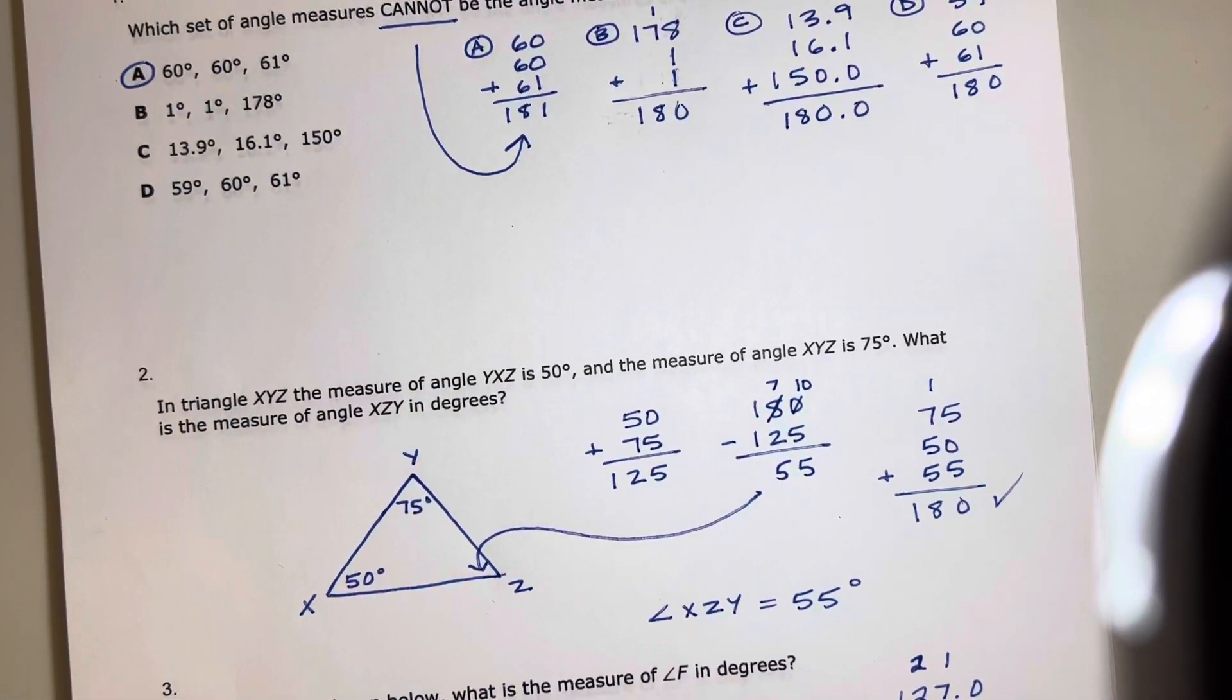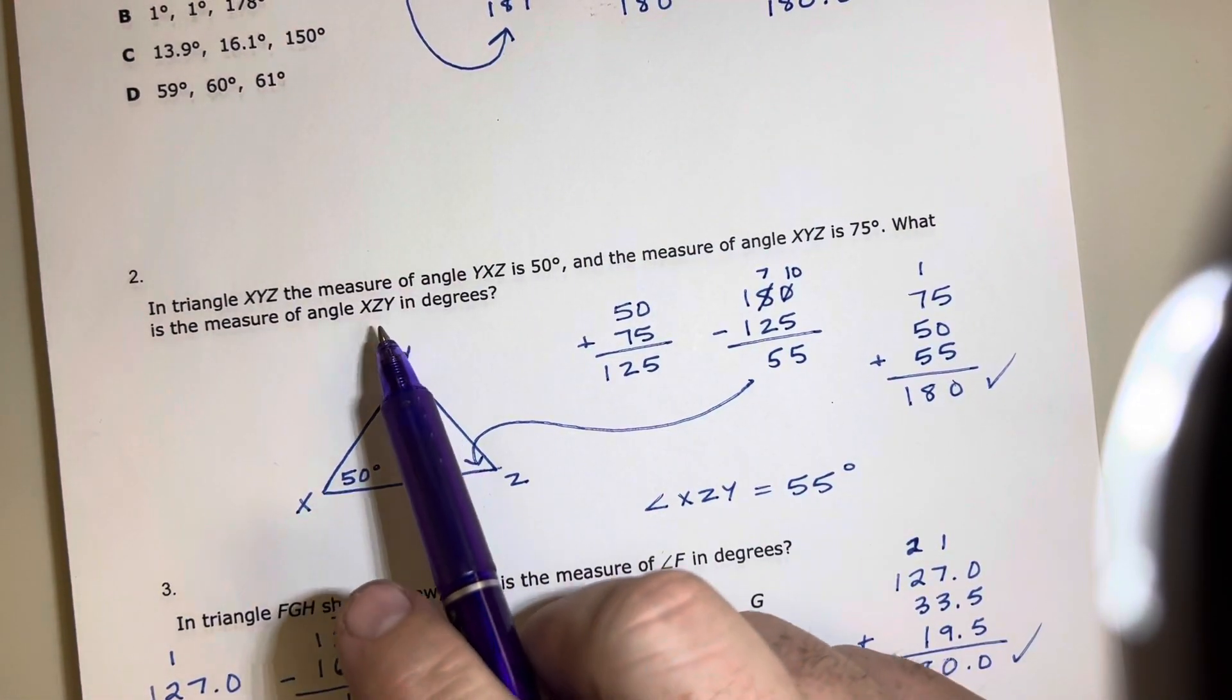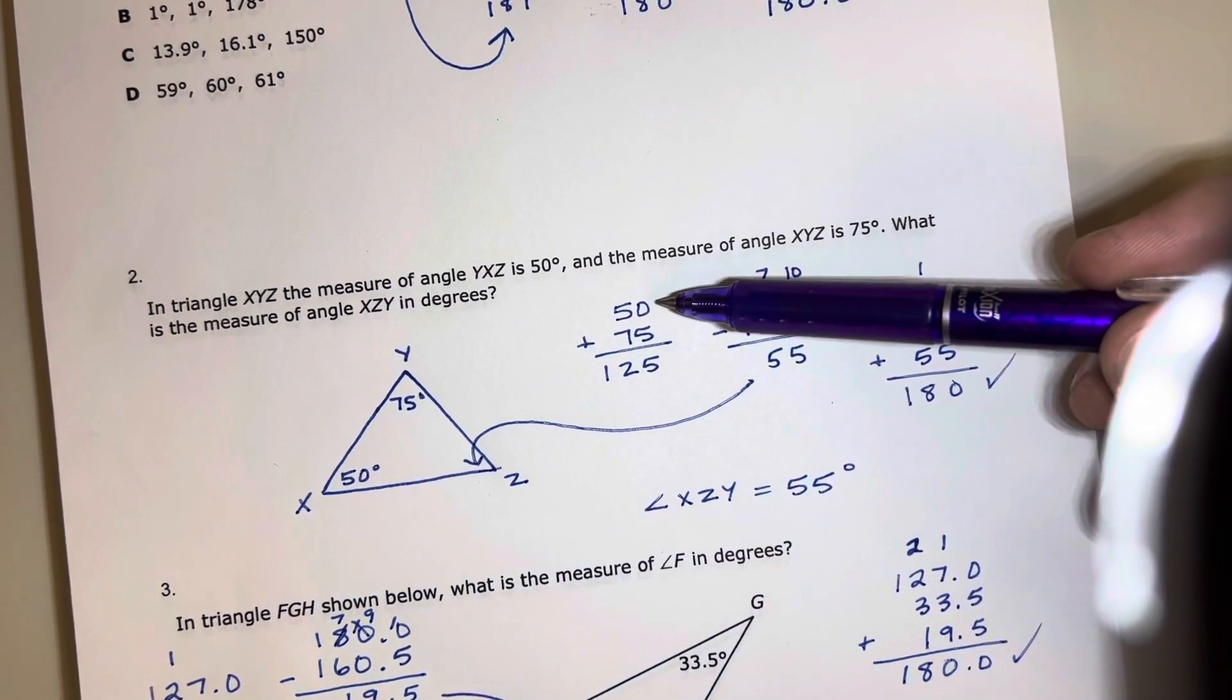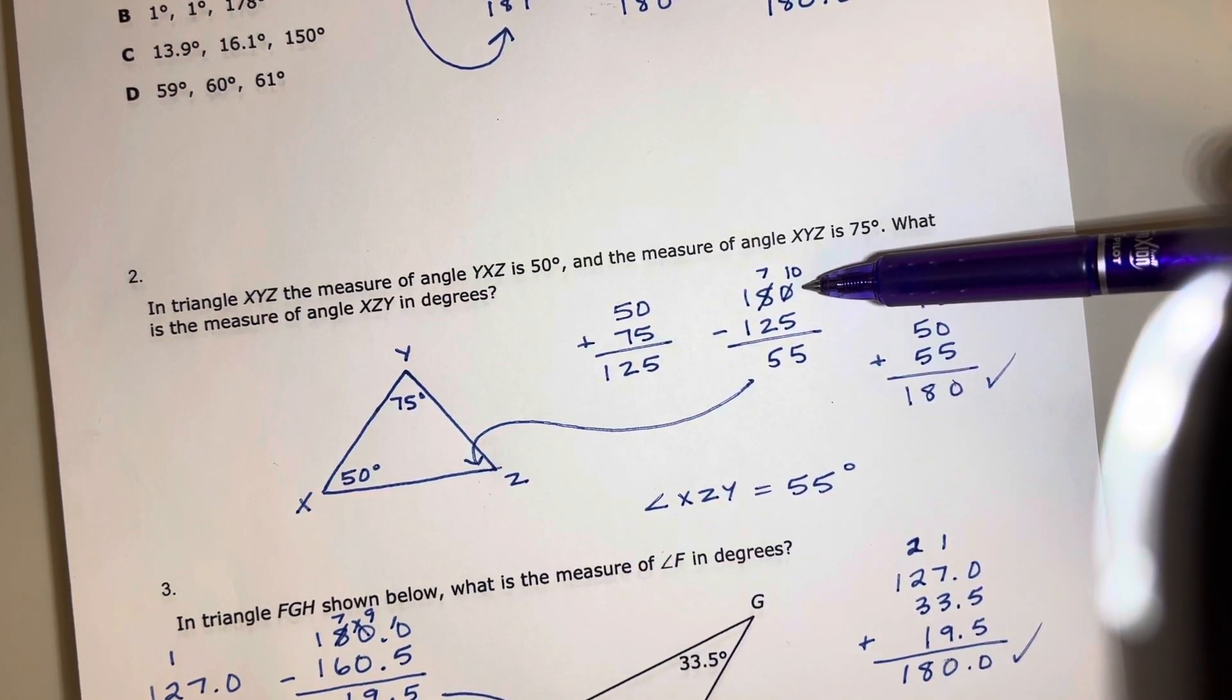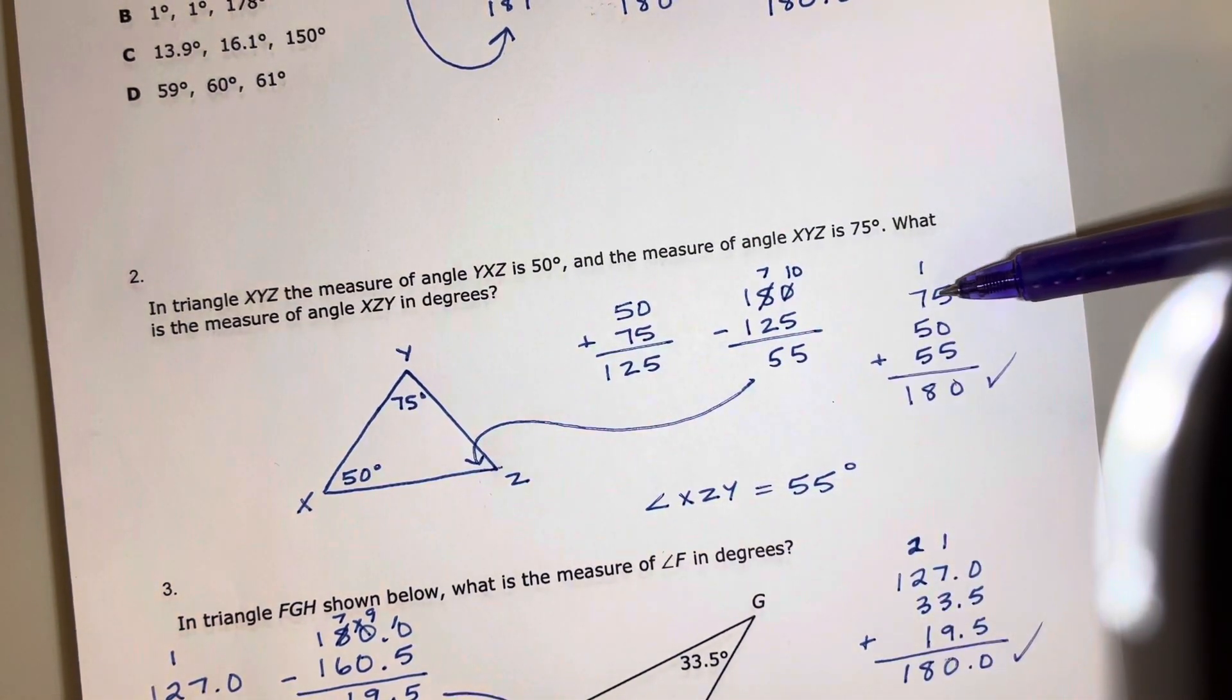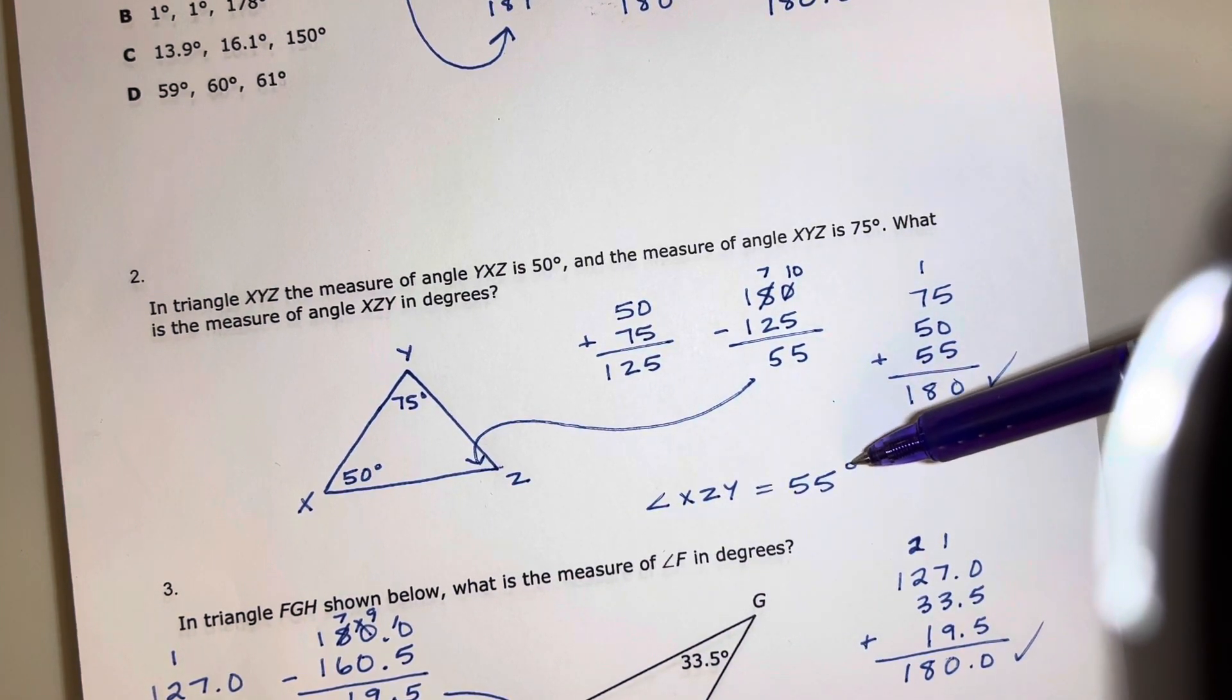In question two we want to find the missing angle measure of angle XZY, which is X to Z to Y, so this angle right here is missing. So we take the two that we know, the 50 and the 75, and we add them together and subtract that from a total of 180 and we're left with 55 degrees. So that's our missing amount and if you add 75, 50, and 55 all back up you can check your answer by knowing that they all add up to 180.